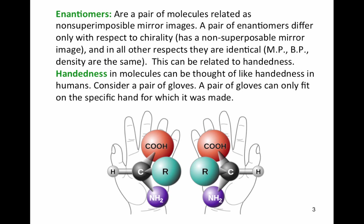Enantiomers are non-superimposable mirror images, but in all other respects they're identical — their melting points, boiling points, and density are the same. Handedness in a molecule can be thought of like handedness in humans. When you hold two palms together, the thumbs line up and the pinkies line up — those are mirror images. But if you hold both palms down and put one hand over the other, you notice they're non-superimposable; your thumbs no longer line up.